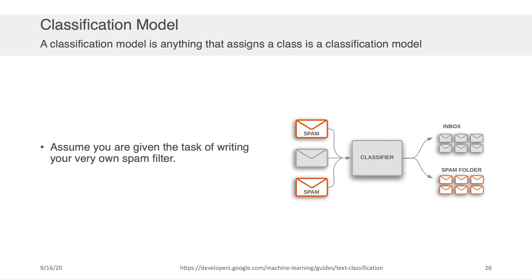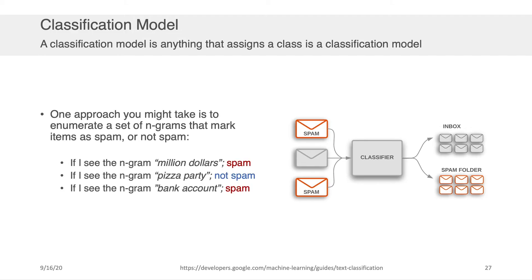The right way to appreciate classification models is by thinking through a simple example: writing a spam filter. Let's assume you were asked to write your very own spam filter. One approach you might take is to enumerate a set of n-grams that mark items as spam or not spam. For example, if you see the n-gram 'million dollars,' you add a point to the spam category; 'pizza party' gets a point in the not-spam category; 'bank account' gets a point in the spam category. You could do this for many more n-grams.